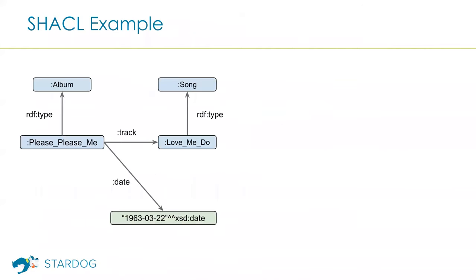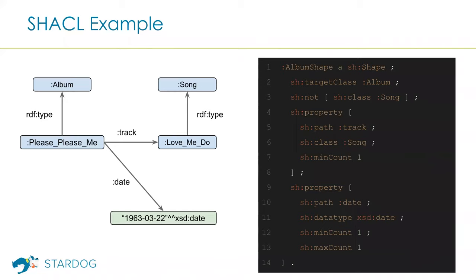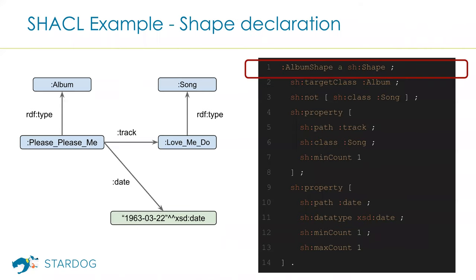We'll look at a smaller subset of the music graph to see how SHACL validation works and what kind of constraints we can define. On the right-hand side, you are seeing a Turtle serialization of SHACL shape definitions. We could have used a graph visualization for the shapes graph, but we'll keep them separate and use this Turtle serialization and go over the shape definition line by line. In the first line, we have a SHACL shape declaration. The sh: prefix you see in the slide is tied to the standard SHACL namespace.